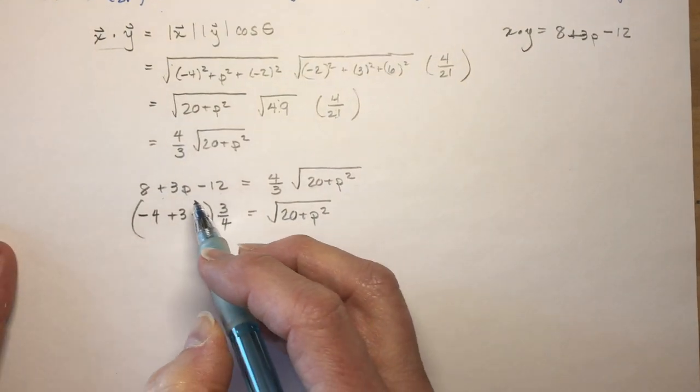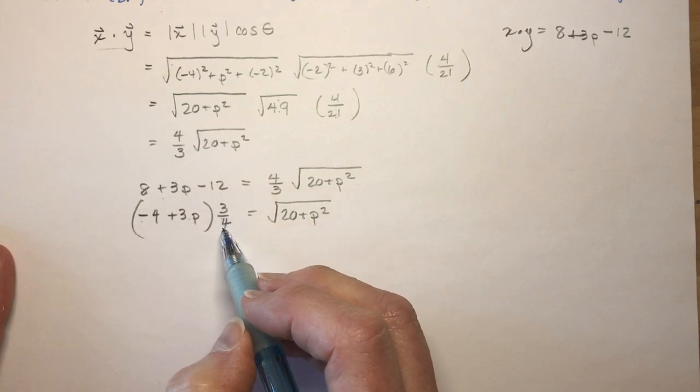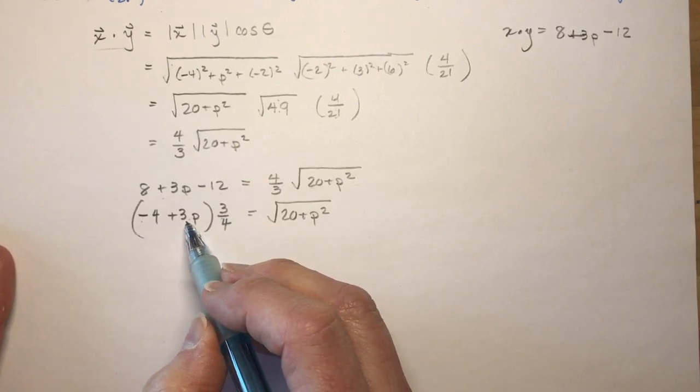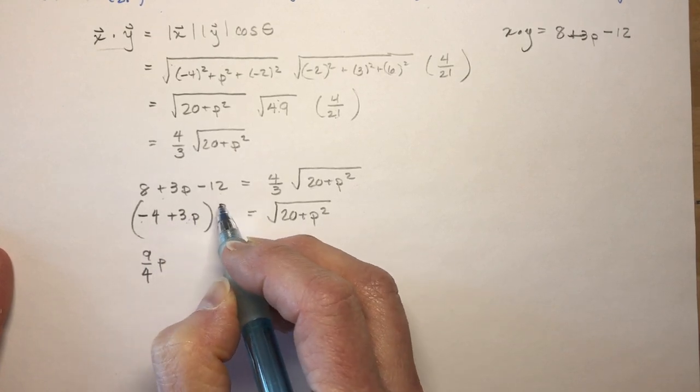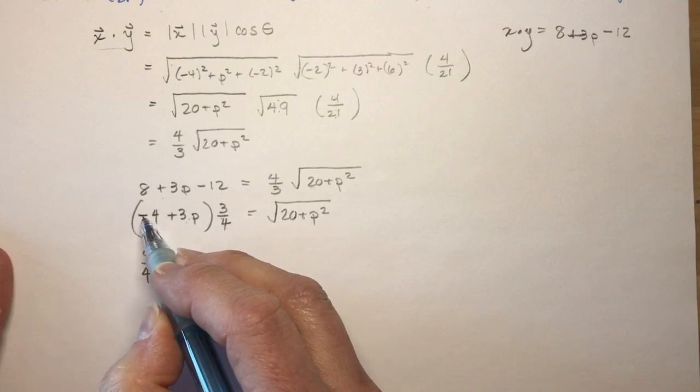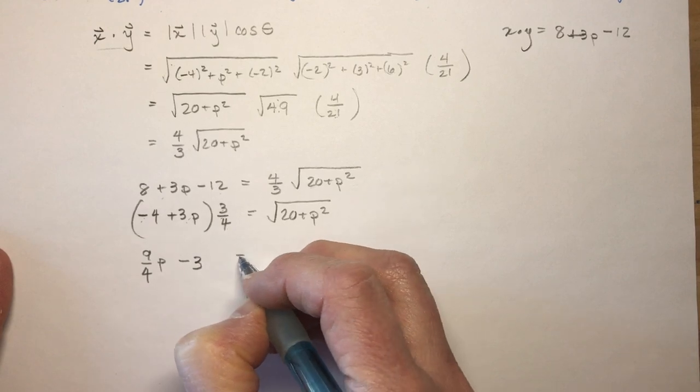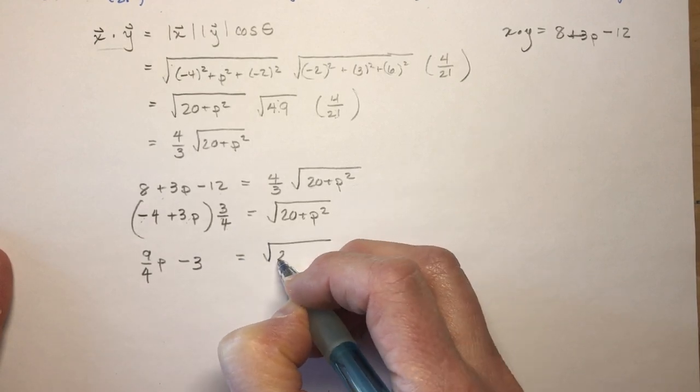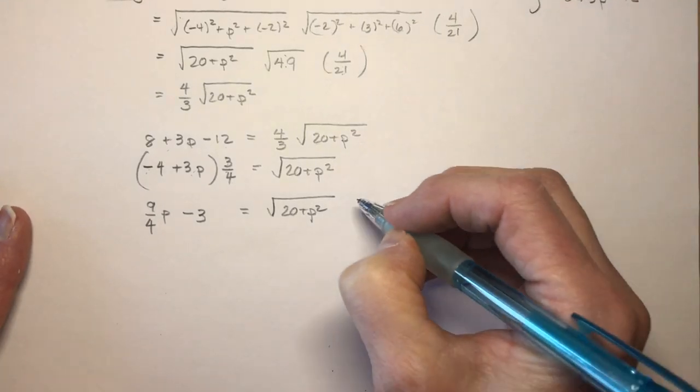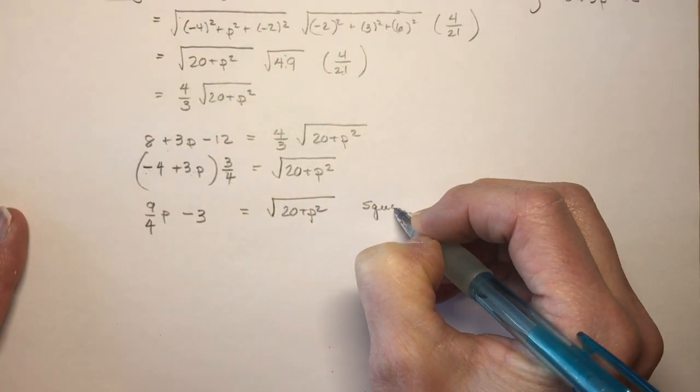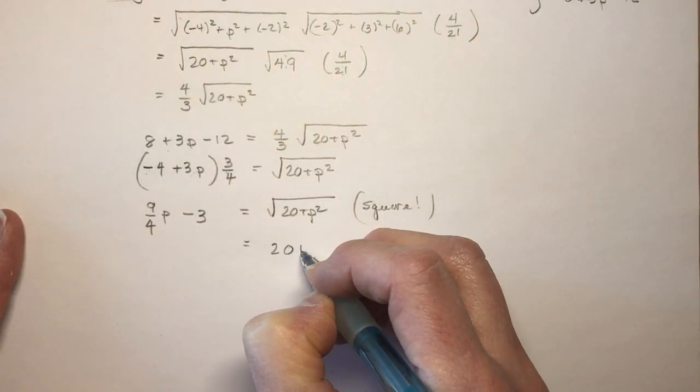And if I expand this here, I would have 9 over 4P. Let's put the P first. Always looks better. 9 quarters P and minus 4 times 3 quarters is minus 3 equals this. Okay, so now I want to get rid of the radical, so I'm going to square both sides.